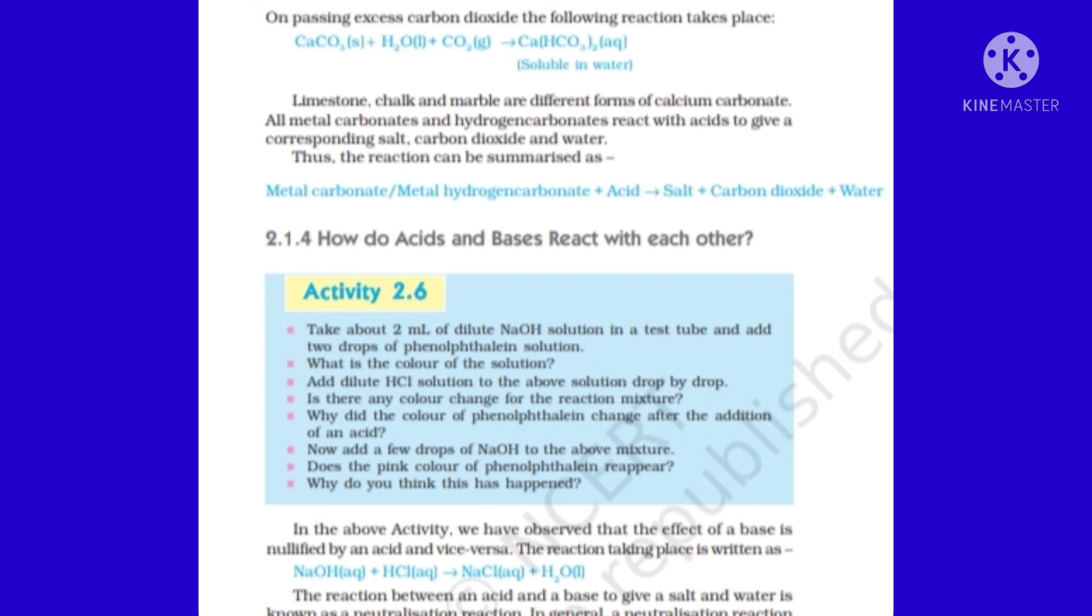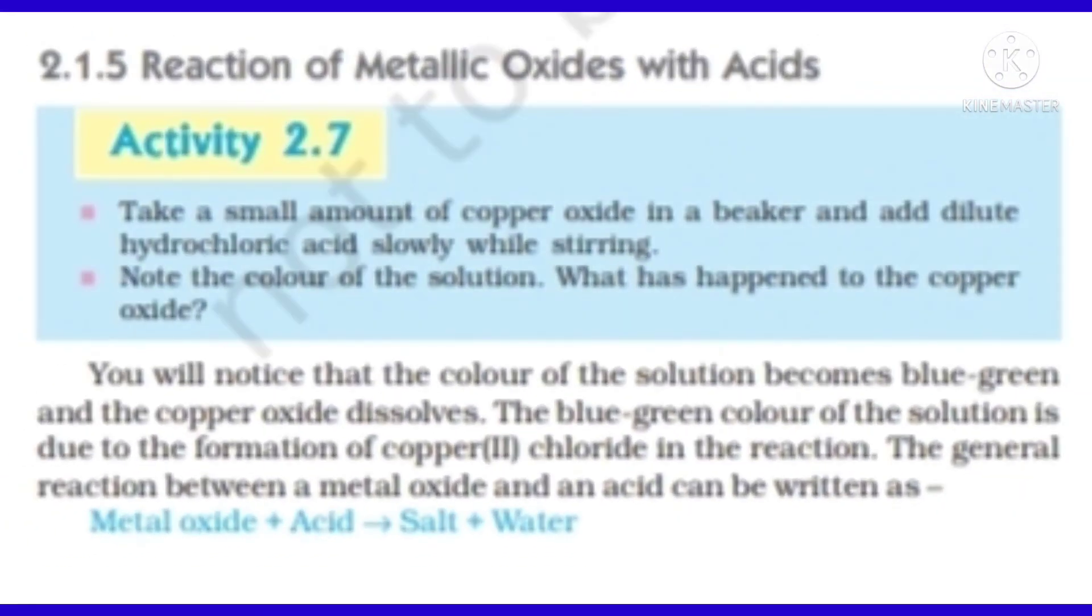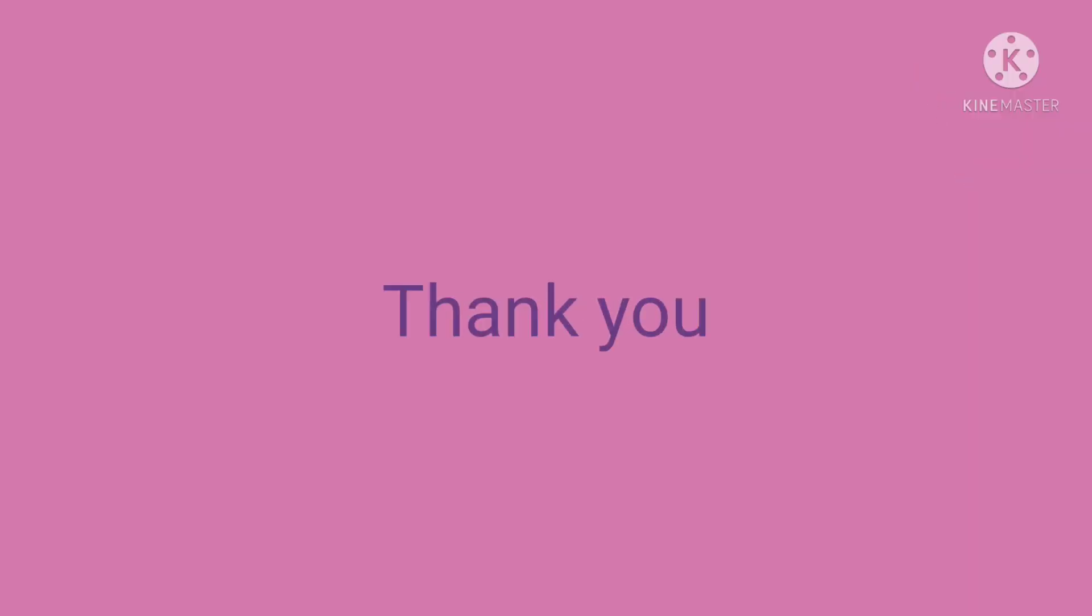In the same way, acid reacts with metallic oxide. Metallic oxide is a base, so you will get salt and water. Acid with metallic oxide forms salt and water. For example, magnesium oxide plus HCl, you will get magnesium chloride plus water. It is also a kind of neutralization reaction. Thank you.